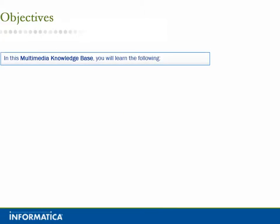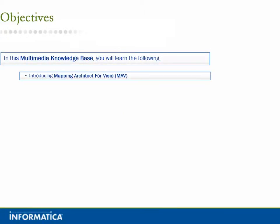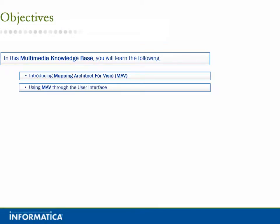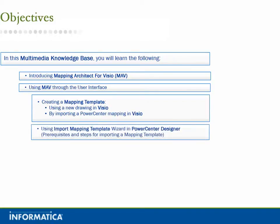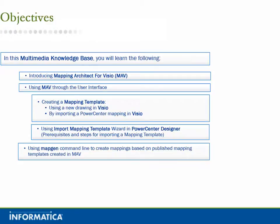In this Multimedia Knowledge Base, you will learn the following: Introducing Mapping Architect for Visio; Using MAV through the User Interface; Creating a Mapping Template from a New Drawing in Visio; Importing a PowerCenter Mapping in Visio; Using the Import Mapping Template Wizard in PowerCenter Designer; Prerequisites and Steps for Importing a Mapping Template; and Using the MapGen command line to create mappings based on published mapping templates created in MAV.